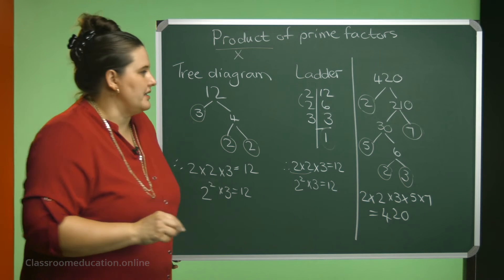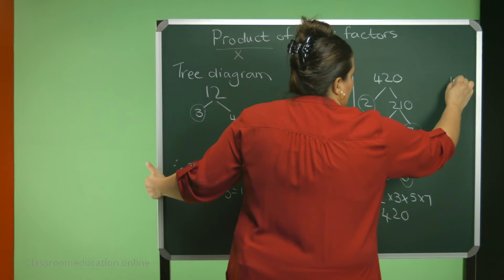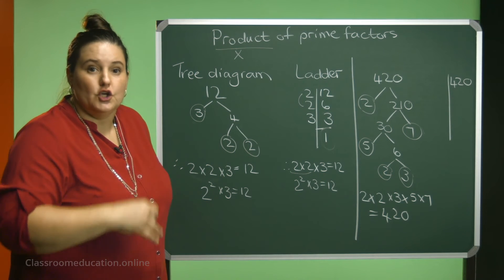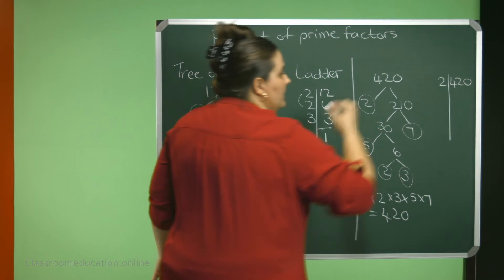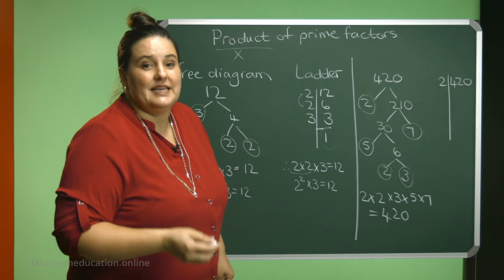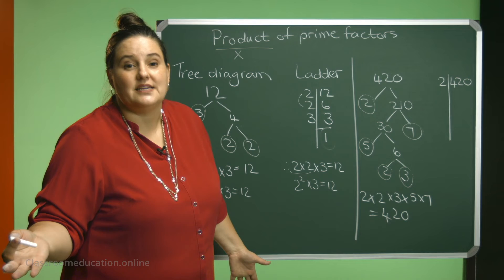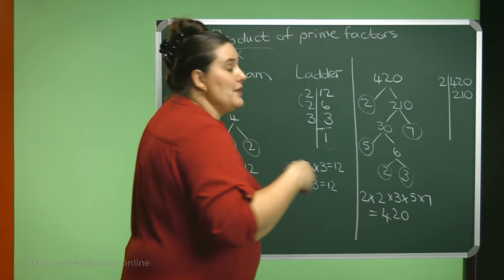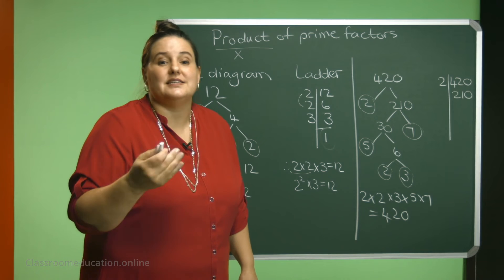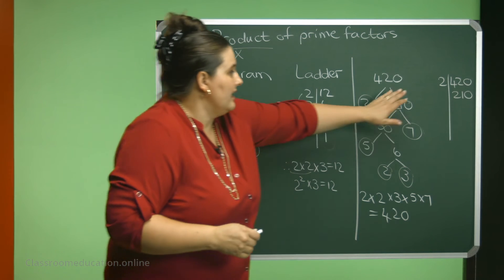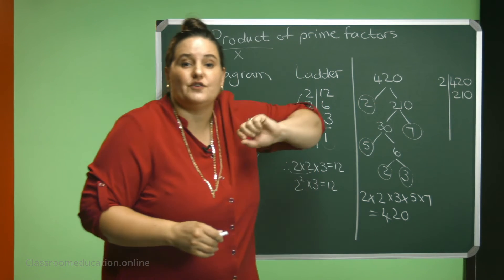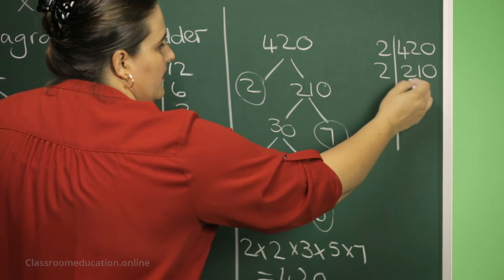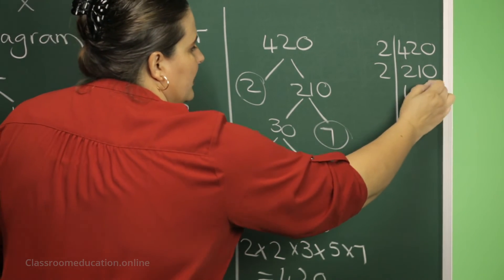Let's do this on the ladder method as well. Start off by using your smallest prime number, 2. Can 2 go into 420? Yes. What's half of 420? 210. Keep on using the 2 until it cannot go into that anymore. Can I get half of 210? Yes. 105. So 2 can go into 210 one hundred and five times.